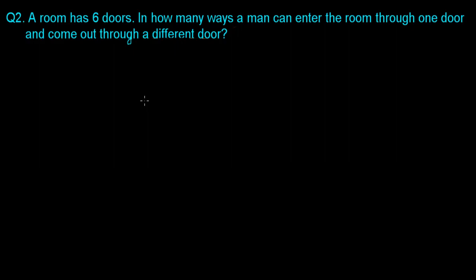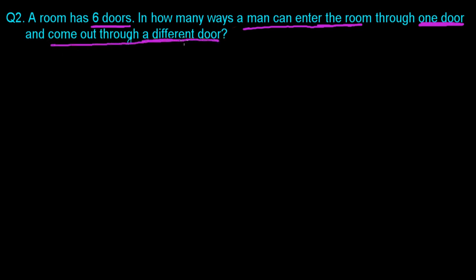Here I have a very lovely question based on the concept of the fundamental principle of counting. A room has six doors. In how many ways can a man enter the room through one door and come out through a different door? Keep in mind he cannot go outside through the same door he entered.